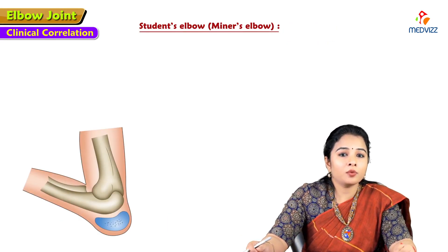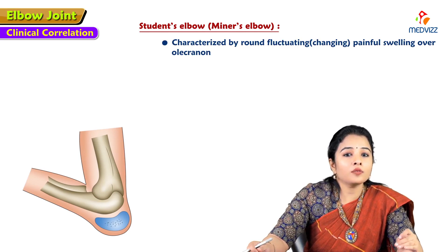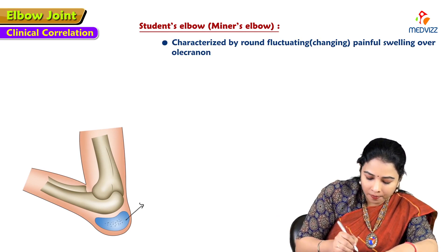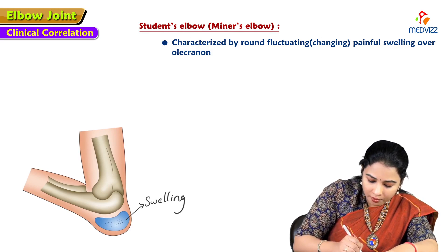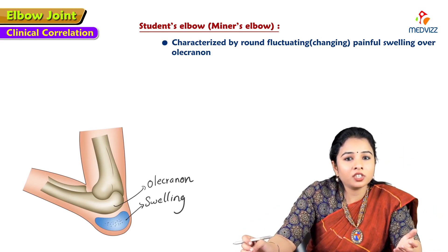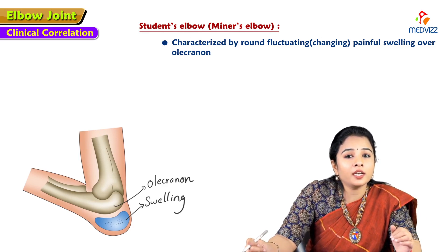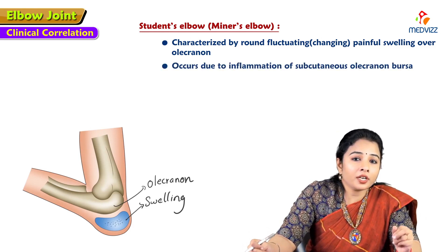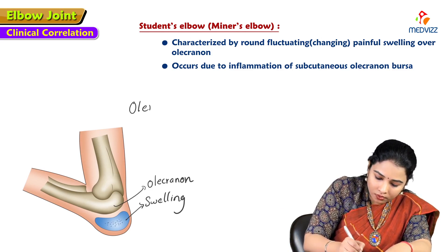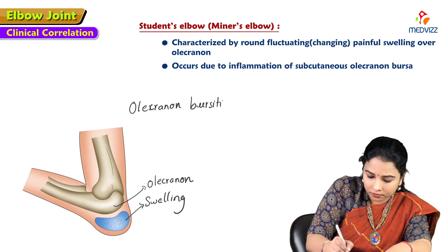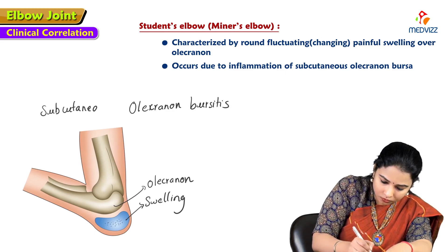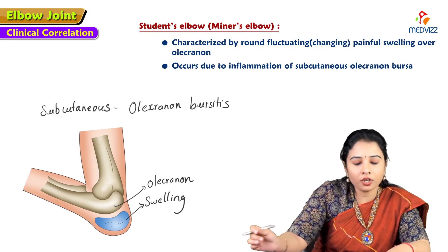Student's elbow or miner's elbow is characterized by a fluctuating, painful swelling over the olecranon process. It occurs due to inflammation of the subcutaneous olecranon bursa — subcutaneous olecranon bursitis.